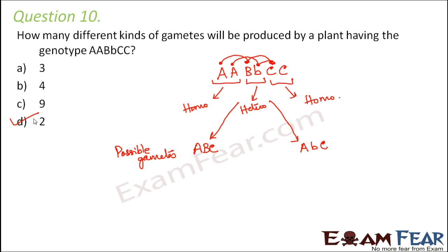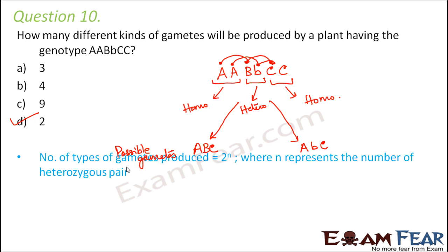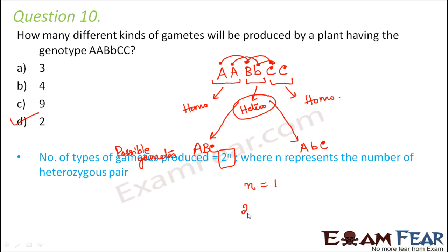Now there is another formula to find this out as a shortcut. The number of types of gametes produced is given by 2 to the power n, where n represents the number of heterozygous pairs. So in this problem, out of the three pairs A, B and C, how many are heterozygous? Only B is heterozygous, so you have only one heterozygous pair. That means n is equal to 1, and therefore the number of types of gametes produced is 2 to the power 1, which is 2.